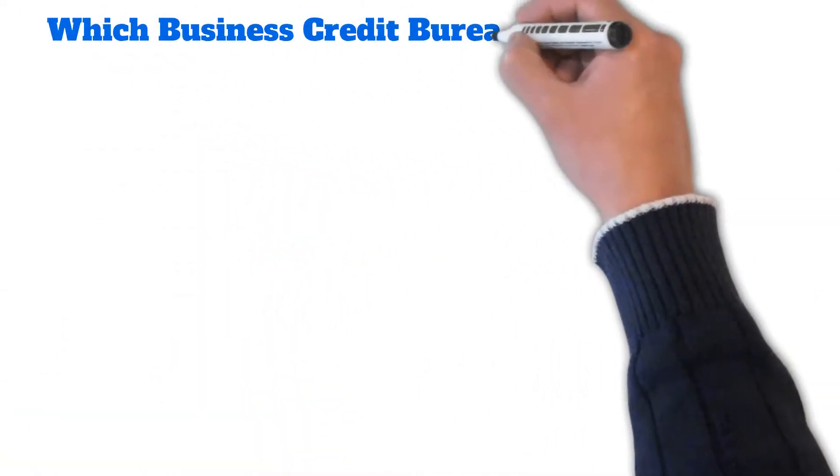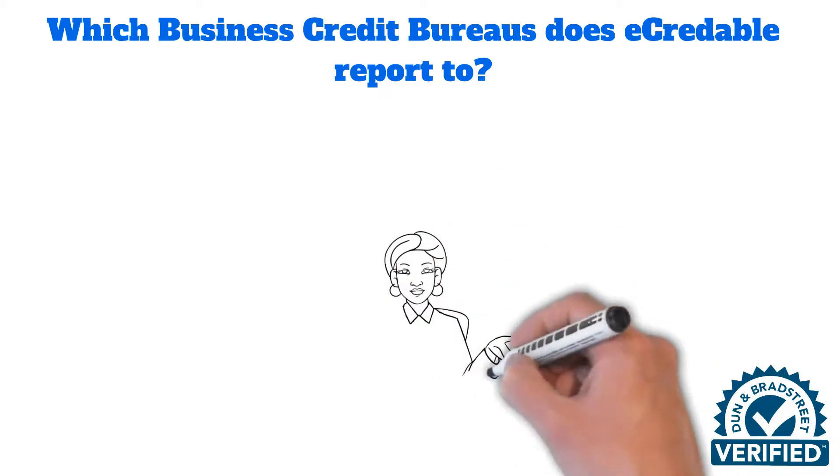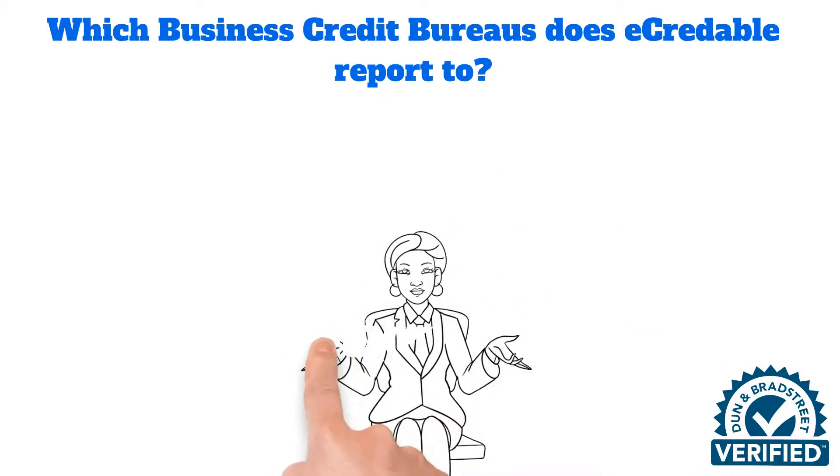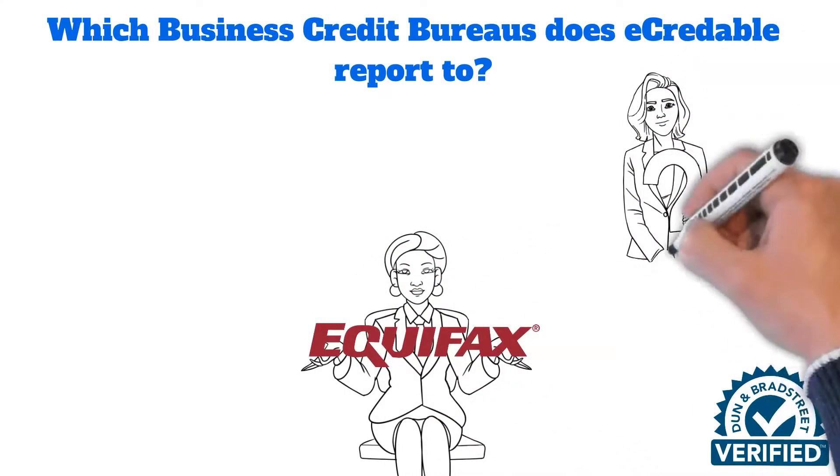eCredible currently reports to Dun & Bradstreet, Equifax, CreditSafe, and SONIA. Now for D&B, eCredible only reports your eCredible business subscription payment currently. They can report to participating business credit bureaus simultaneously. Most any utility vendor or supplier that you have a contractual agreement with and pay on a monthly, quarterly, or semi-annual basis.